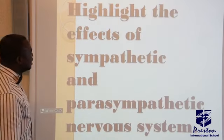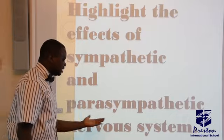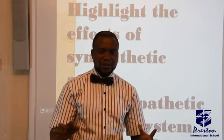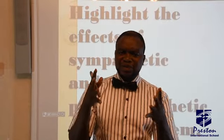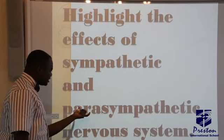We want to highlight the effects of the sympathetic and parasympathetic nervous system. Sympathetic is all about stress — when there is anger, when you are not okay, when you are under stress, the nervous system in place at that time is called sympathetic. Parasympathetic is the system that brings you back to normal after you have been stressed, so it is in charge of normalcy after stress or anger.